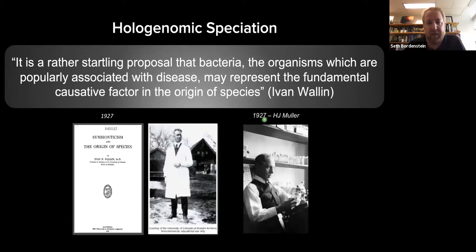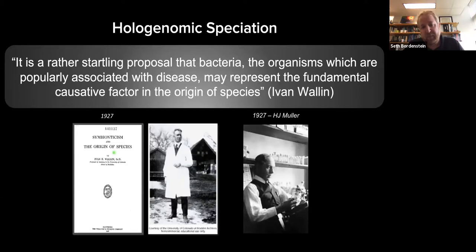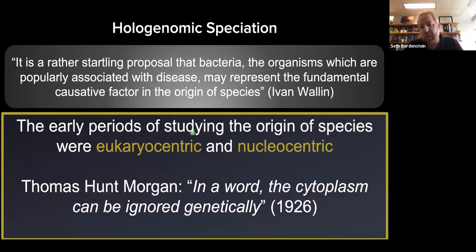Wallin's work was somewhat trumped by H.J. Muller, who founded the field of genetics with his mutation experiments in the same year that Wallin published his book, Symbiontism and the Origin of Species. Genetics really took off from that point. The early periods of studying the origin of species were both eukaryocentric, focusing on large fauna and flora, and then nucleocentric with the modern synthesis. Thomas Hunt Morgan went as far as to say 'the cytoplasm can be ignored genetically,' which would have eliminated mitochondrial biology and chloroplast genetics.